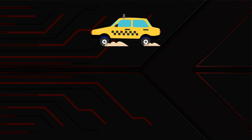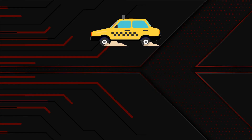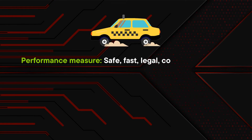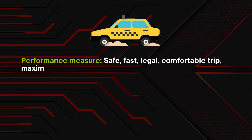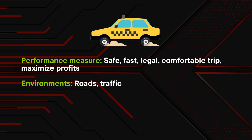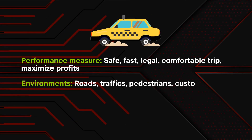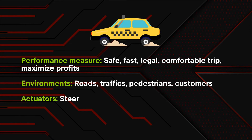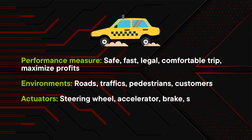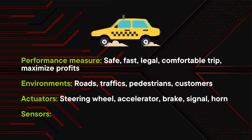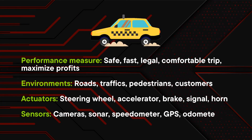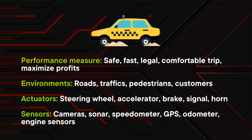For an automated taxi driver agent, the performance measure will be a safe, fast, legal, comfortable trip with maximized profits. The environments are roads, traffic, pedestrians, and customers. The actuators will be the steering wheel, accelerator, brake, signal, and horn. The sensors will be cameras, sonar, speedometer, GPS, odometer, and engine sensors.